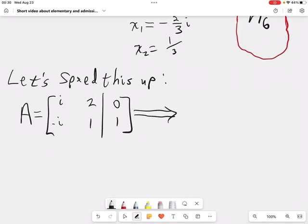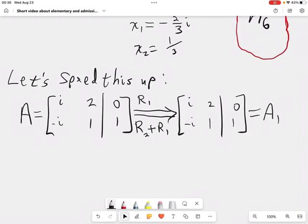And now I'm going to produce matrices faster, a little bit faster. In my first step, I'm going to do the same thing I did before. It's going to be an elementary row operation. Row 1 is left alone. To row 2, I add row 1.